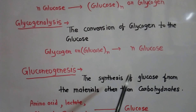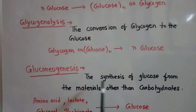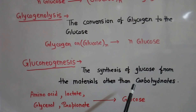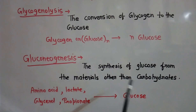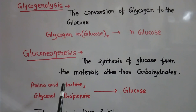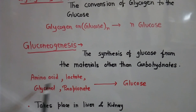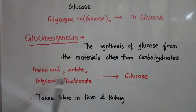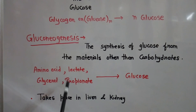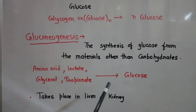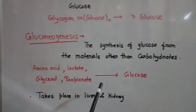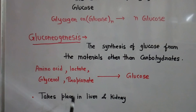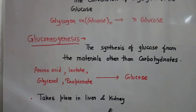The fourth process is gluconeogenesis. It means synthesis of glucose from materials other than carbohydrates. The non-carbohydrate materials may be amino acids, lactates, glycerols, and propionates. These are all converted to glucose when there is deficiency of glucose in the blood. This process takes place in the liver and kidney.